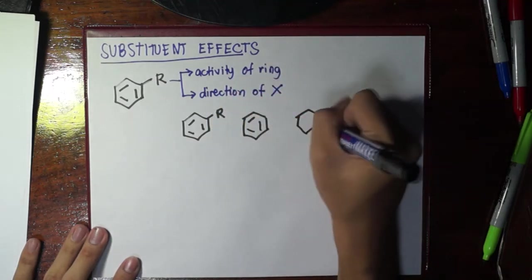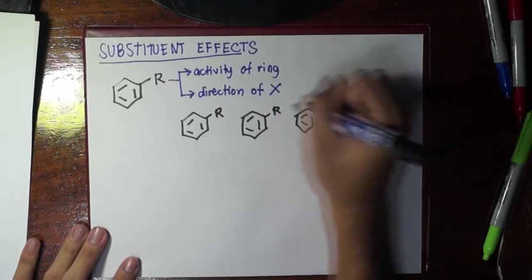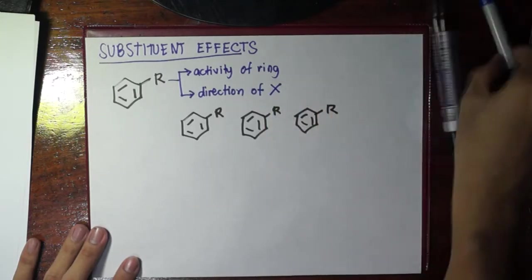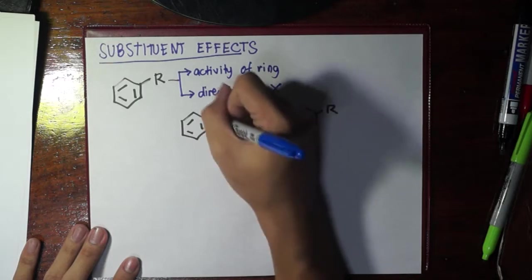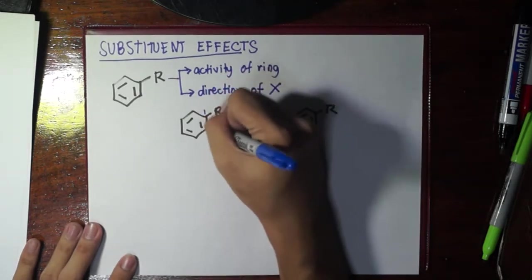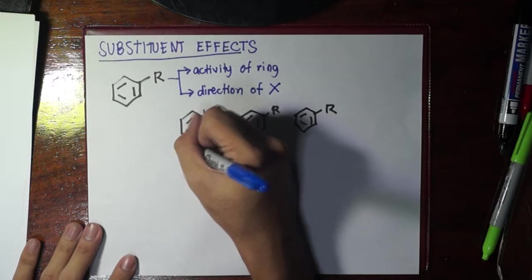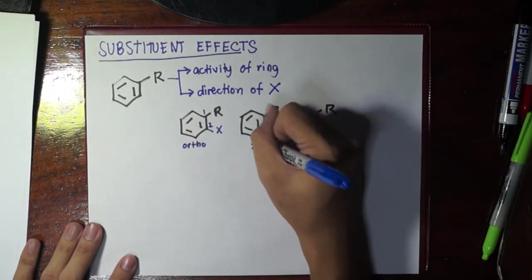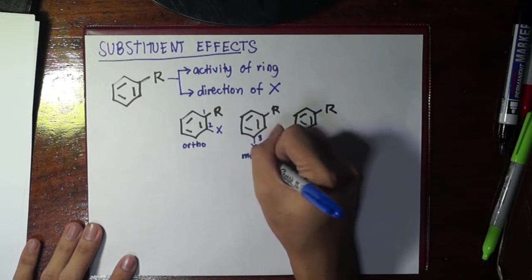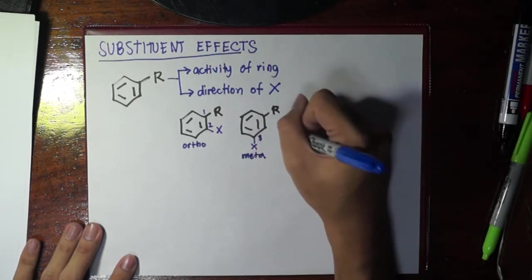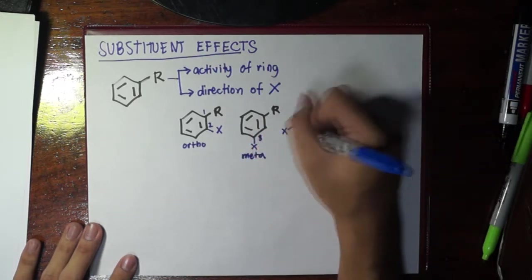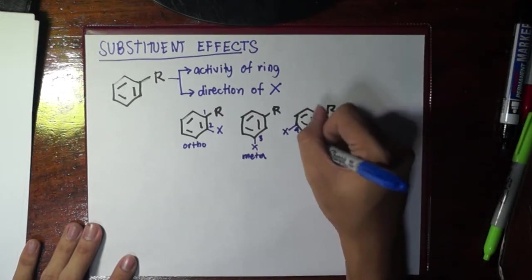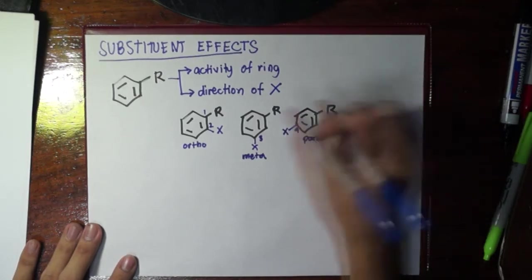Let's draw these first. If it is in positions one-two, this is carbon one and this is two, and you put the X here, this is called ortho. If you put the X at three, this is meta.